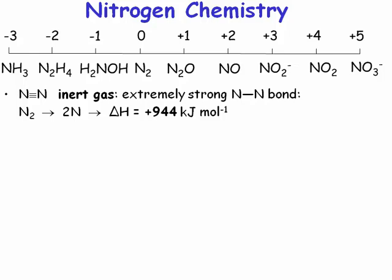So N2 is a relatively inert gas. Why is it relatively inert? It's non-polar — if you're going to predict the reactivity of something, you have to look at its polarity. N2 is non-polar because the two nitrogen atoms have the same electronegativity, and it is triply bonded. Any reactivity of N2 requires us to break a non-polar triple bond with a bond dissociation energy of plus 944 kilojoules per mole.